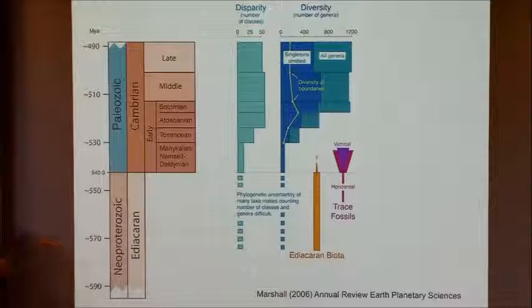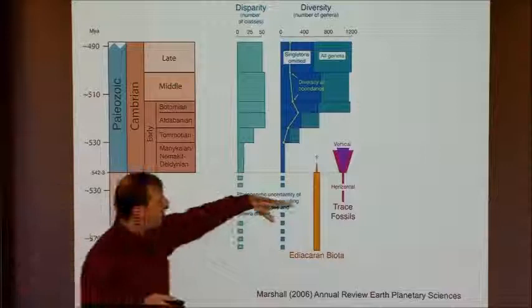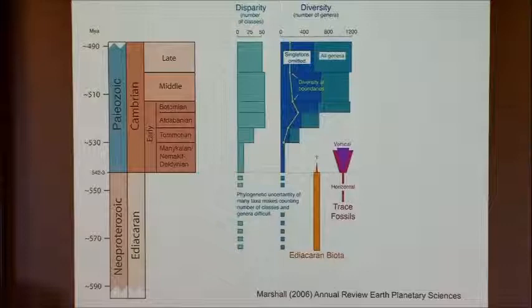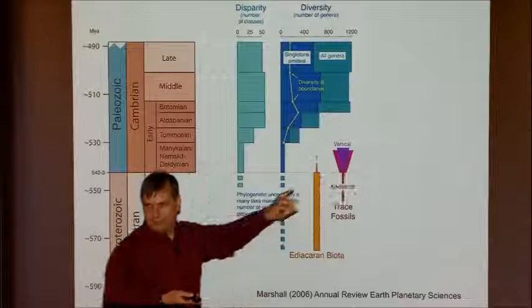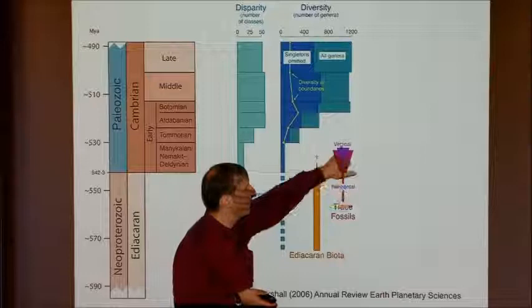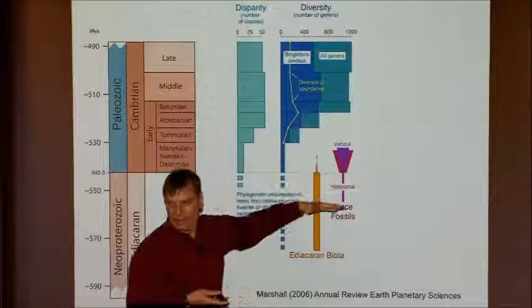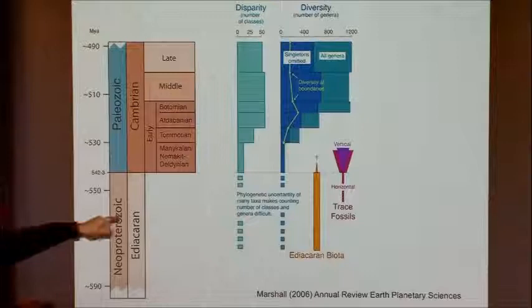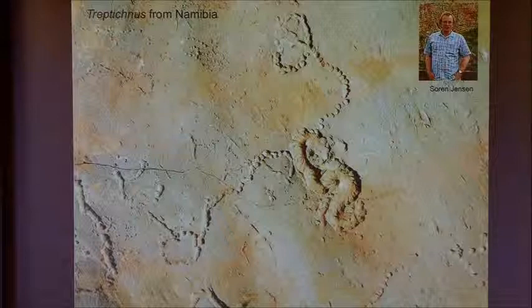The next to appear — and this is really important — are trace fossils: tracks and trails of organisms. That starts at about 555 million years ago, and initially they're only horizontal. Then precisely at the Precambrian–Cambrian boundary, they go vertical. The argument is that you can't burrow unless you have a coelom, and the only things that have coeloms are the triploblasts. So vertical burrows must indicate the origin of triploblastic animals. The trace fossil record gives us some indication of the underlying biology even though we can't identify the organisms.